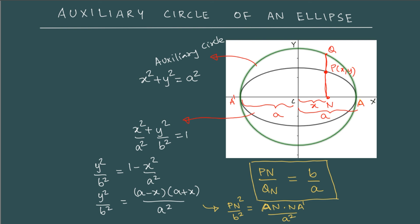Now let us pay attention to point Q. Suppose I join point Q to the vertices A and A' of the ellipse. From our school geometry, we know that if you take a circle and have a triangle with one of the sides as the diameter, then the angle AQA' is actually 90 degrees. And then we have a property relating QN to AN and NA'.